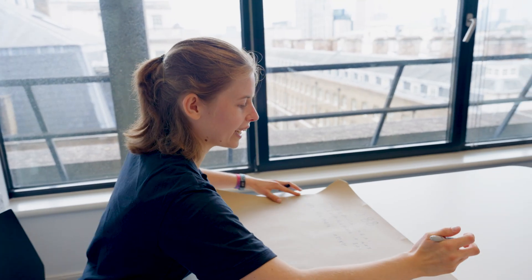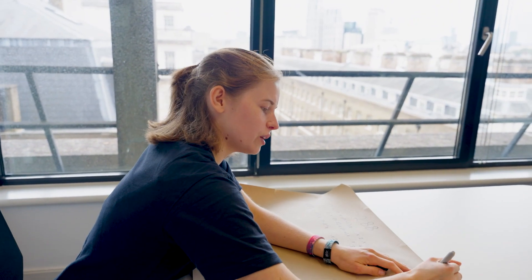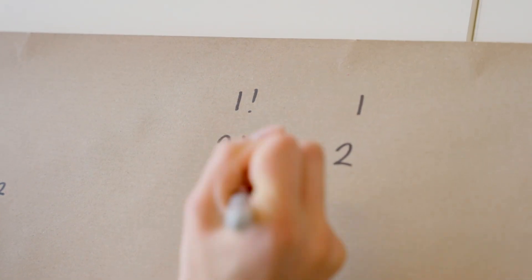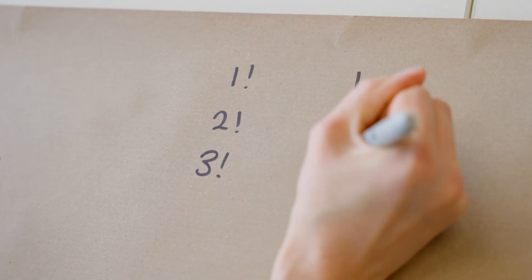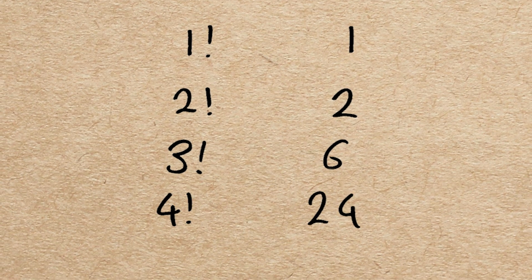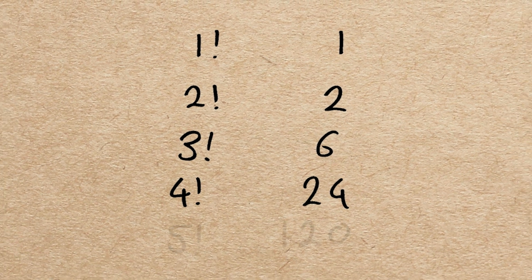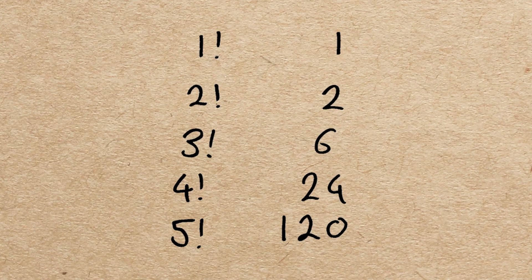I'm going to write out some of the factorials here. So 1 factorial, 1 times 1 is 1. 2 factorial, well that's 2 times 1 is 2. 3 factorial is going to be 3 times 2 times 1 is 6. 4 factorial is 24. 5 factorial is 120, and so on.